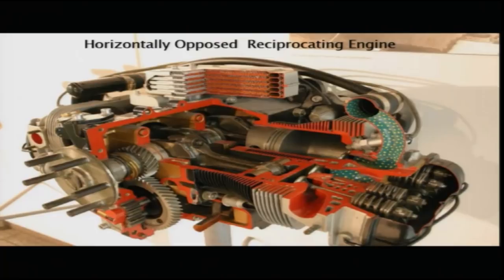Let us see about the different parts of the reciprocating engine. Here in this figure you can see a horizontally opposed reciprocating engine, showing the different parts. This is a cutaway diagram giving you a cut view of the engine.